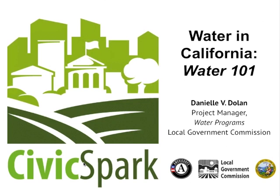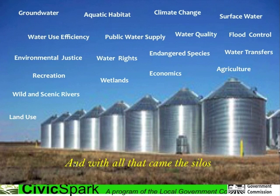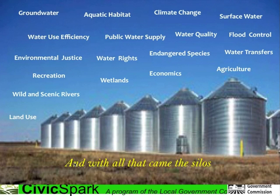When Jenny asked me to do a water webinar for all of you, I had a hard time deciding what to cover and what not to cover. Water is so incredibly complex. People spend their entire lives and careers working in various aspects of water, and typically they do so in their own little bubble or silo. In California, we have separate agencies that manage every aspect of water independently, whether it's groundwater, aquatic habitat, climate change, water quality, endangered species, recreation, wild and scenic rivers, land use, you name it. Water managers across the state refer to these silos as their expertise. But what I want to do is teach all of you how to think between the silos, to see how all these different water sectors are interconnected.